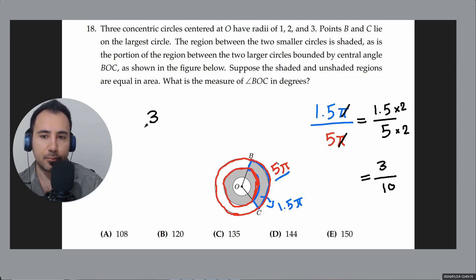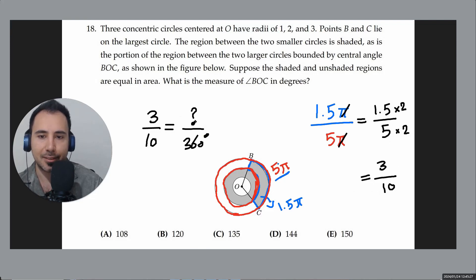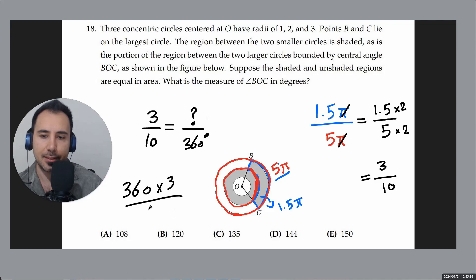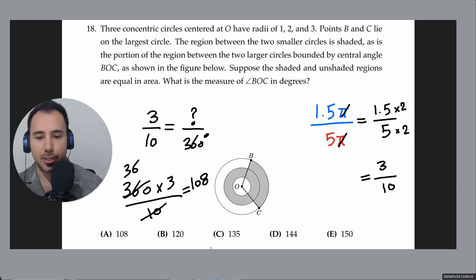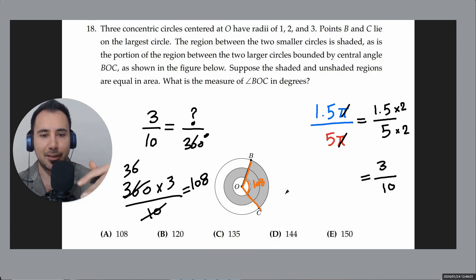A full circle is 360 degrees, so the angle is 360 multiplied by 3/10. Dividing first: 360 ÷ 10 = 36, then 36 × 3 = 108 degrees. So this portion, which corresponds to the angle shown, is 108 degrees — because 108 degrees is 3 tenths of a full circle.